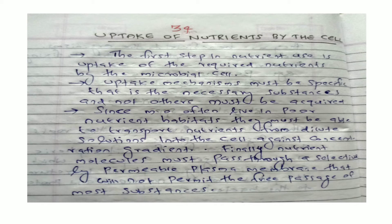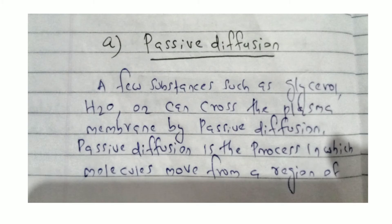Finally, nutrient molecules must pass through a selectively permeable plasma membrane that will not permit the free passage of most substances — passive diffusion is not generally possible. A few substances such as glycerol, water, and oxygen can cross the plasma membrane by passive diffusion. Passive diffusion is the process by which molecules move from a region of higher concentration to a region of lower concentration as a result of random thermal agitation, without using carrier protein or energy.